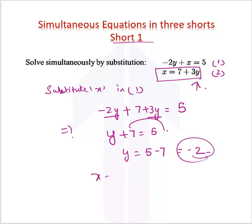We get x is equal to 7 plus 3 times minus 2. So 7 minus 6, x is equal to 1. This is how we solve two equations with two variables by substitution.